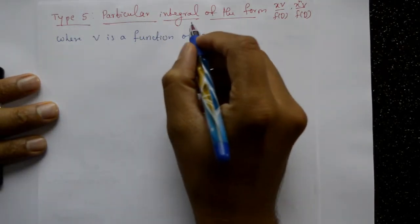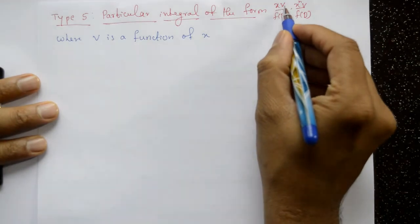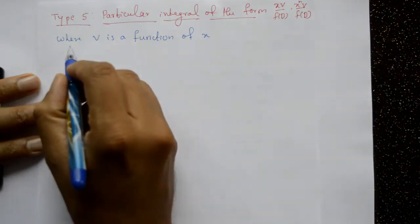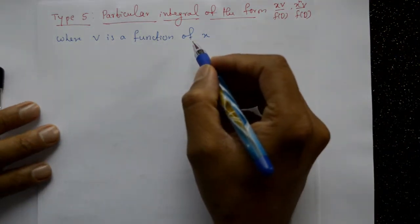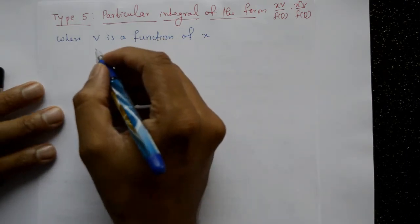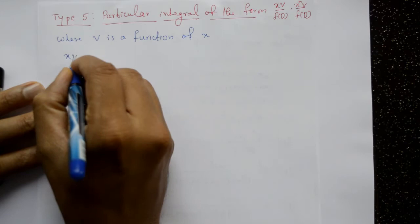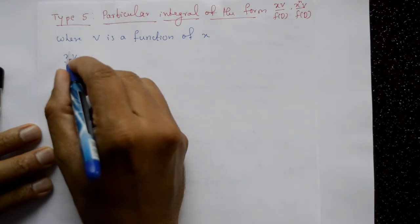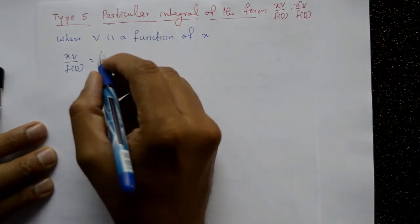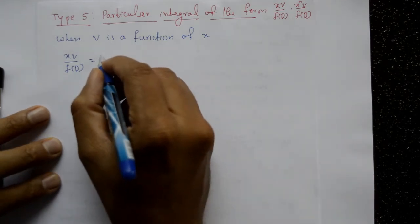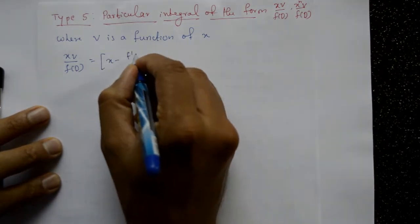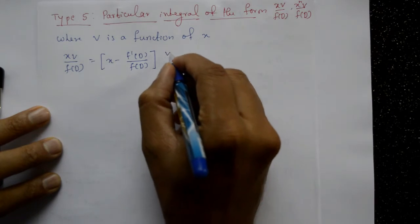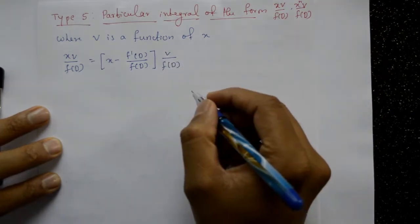Type 5: particular integral of the form x·φ / f(D), or xⁿ·φ / f(D), where φ is a function of x. The Type 5 formula is: x·φ / f(D) = [x − f'(D)/f(D)] · φ/f(D). This is the formula.